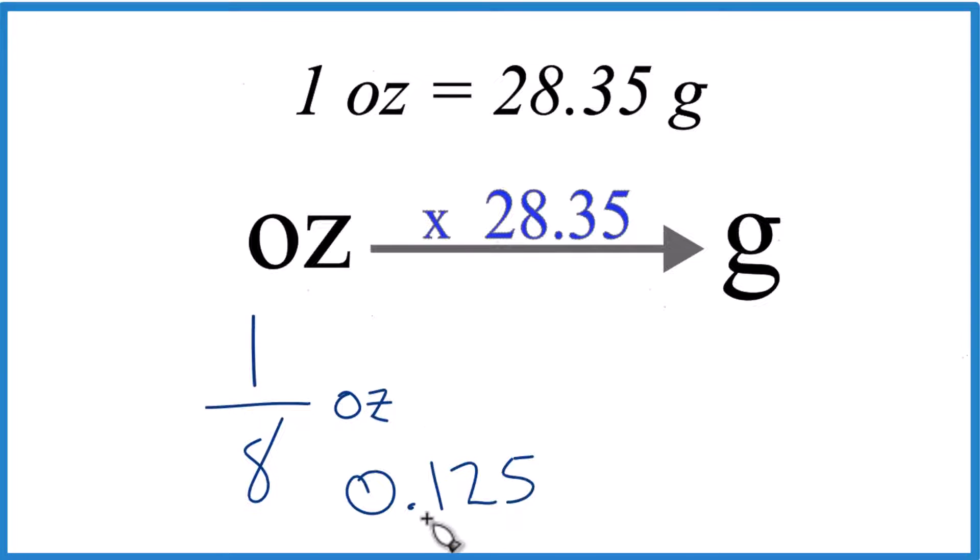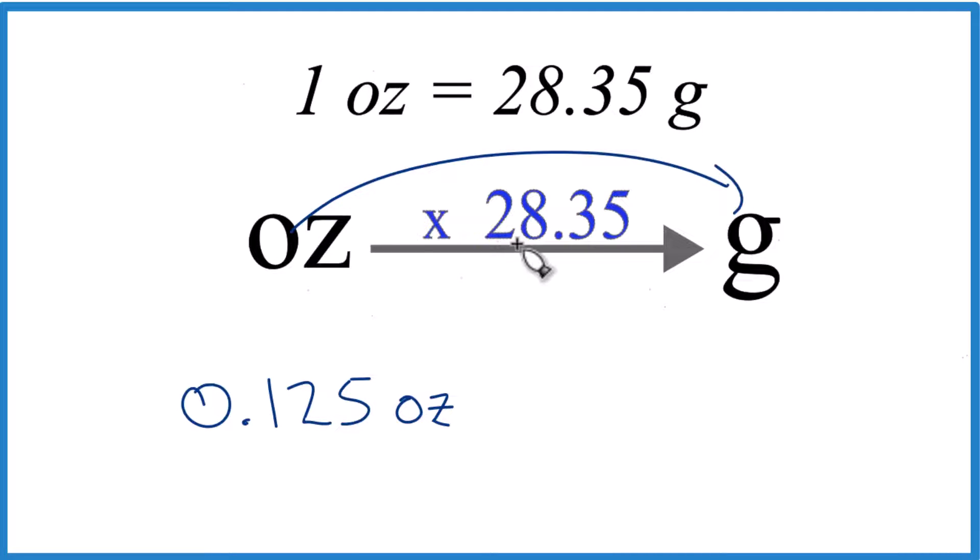So let's convert 0.125 ounces to grams rather than one-eighth. It's the same thing, this just makes it easier to do the multiplication. When we're going from ounces to grams, we're going to multiply by 28.35. That's because there's 28.35 grams in one ounce.